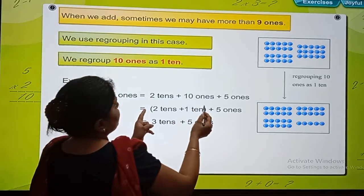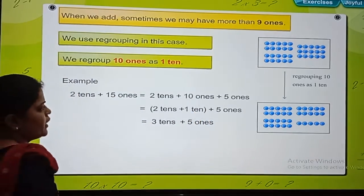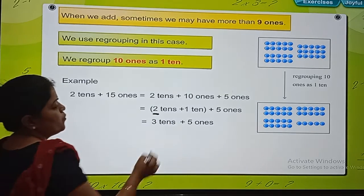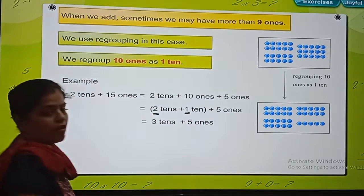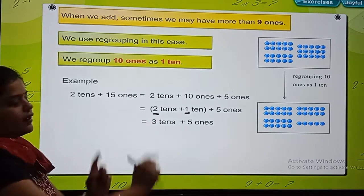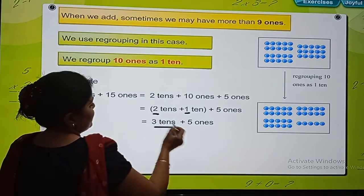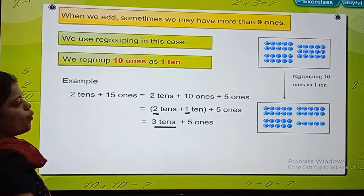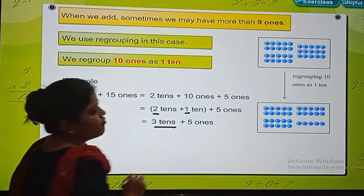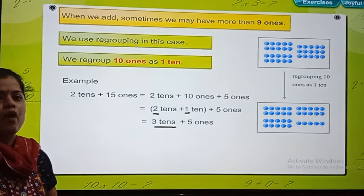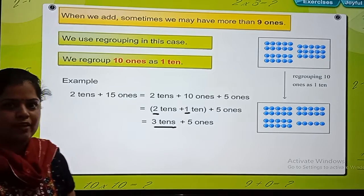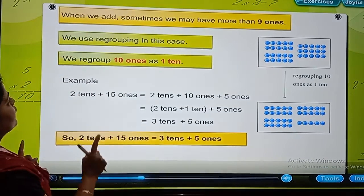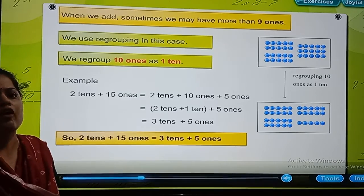We will add the digit at the tens place. So what are the digits at tens place? 2 plus 1. So 2 plus 1 is 3 tens. And what is remaining? 5 ones. This was regrouping of numbers.